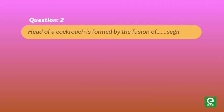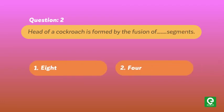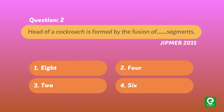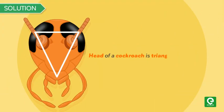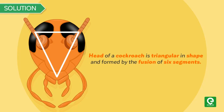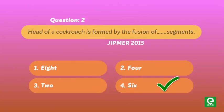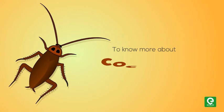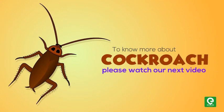Question 2: The head of a cockroach is formed by the fusion of how many segments — (1) eight, (2) four, (3) two, or (4) six? This question was asked in JIPMER 2015. Solution: The head of a cockroach is triangular in shape and formed by the fusion of six segments; hence option 4 is correct. To know more about cockroach, please watch our next video.